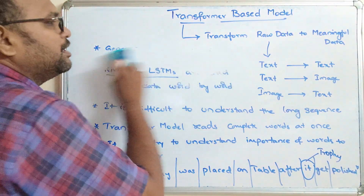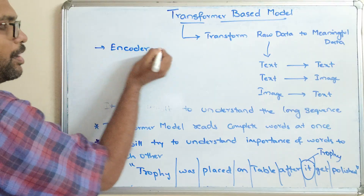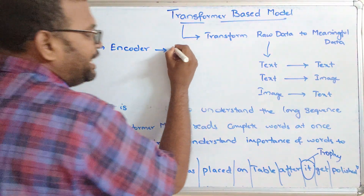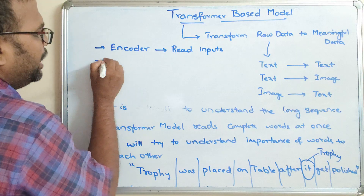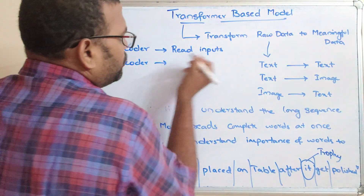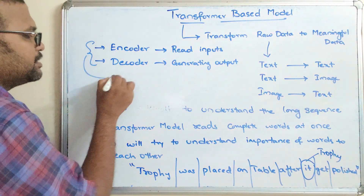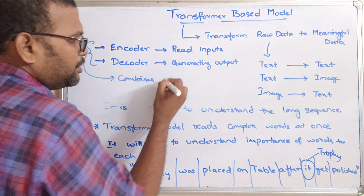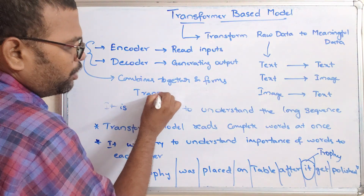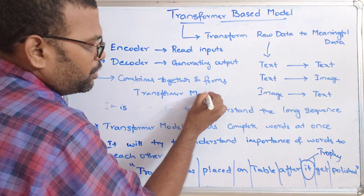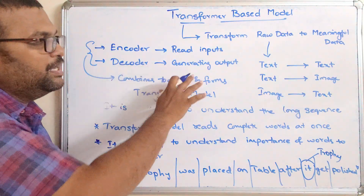The transformer model uses two main components. One is the encoder, which reads and understands the inputs. The second one is the decoder, which is used for generating the output. These two things combine together and form the transformer model. So the encoder reads the data and the decoder generates the output.